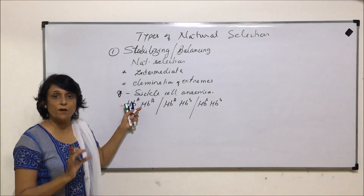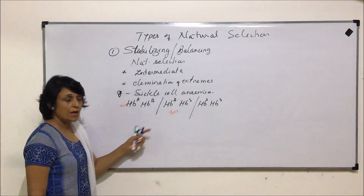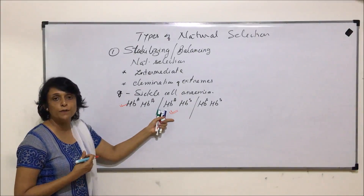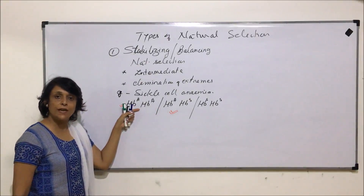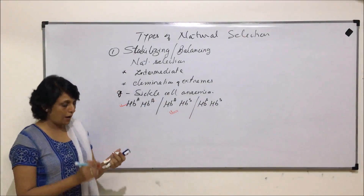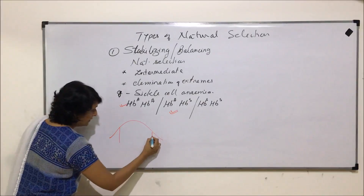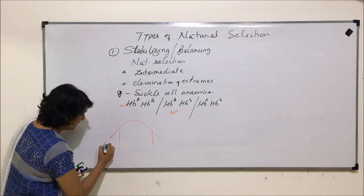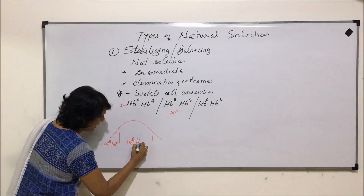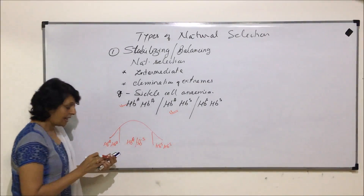Theoretically the homozygous normal genotype is biologically perfect, but nature selects the most suitable organism. In an area where malaria is predominant, the normal individuals get infected and the homozygous recessive individuals die at an early age. If we plot a graph, originally the two ends show the extremes — HbA HbA and HbS HbS — with the heterozygous condition in the middle.